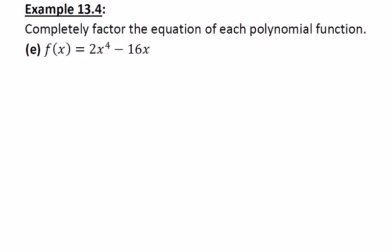Example 13.4e asks us to completely factor f of x equals 2x to the 4 minus 16x. In this example, we only have two terms. This is known as a binomial.